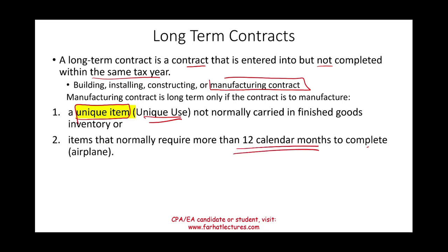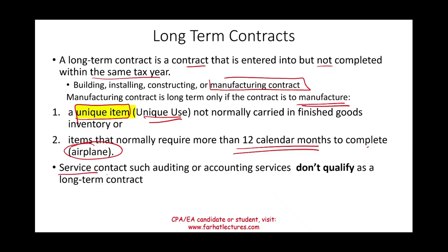Items that normally require more than 12 calendar months to complete also qualify. For example, building an airplane takes longer than 12 months, so that manufacturing contract qualifies. Bear in mind that service contracts — such as auditing, accounting, legal services, or consultation — do not qualify as long-term contracts.